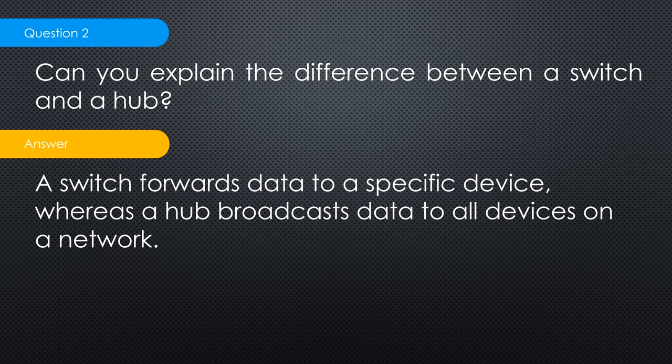Back in the day, with a four-port hub, traffic coming in on port one would be transmitted out on ports two, three, and four. Wherever it was intended — say port three — that computer would accept and process it. Computers on ports two and four would also receive the traffic but discard it because it was not meant for them.